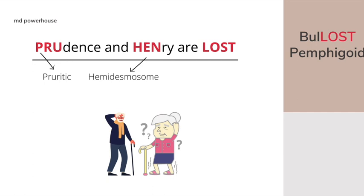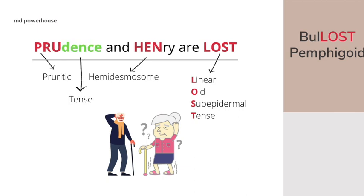And 'lost' — what does that mean? L stands for linear, as in linear IgG against hemidesmosomes. O stands for old — remember, patients are usually 60 years and older. S stands for sub-epidermal, because on histology you'll see sub-epidermal cleavage. T stands for tense bullae. To make the mnemonic even more effective, you can think of Prudence as 'pru-tense' — pru for pruritic and 'tense' for tense bullae.